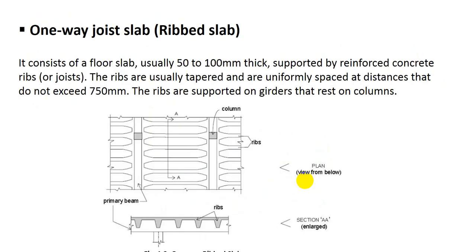One-way joist slab, also called ribbed slab. It consists of a floor slab usually 50 to 100 millimeters thick, supported by reinforced concrete ribs. The ribs are usually tapered and are uniformly spaced at a distance that does not exceed 705 millimeters. The ribs are supported on girders that rest on columns.